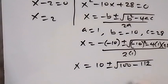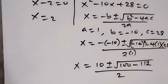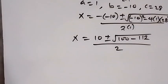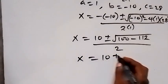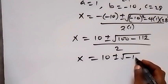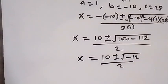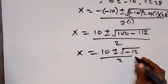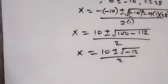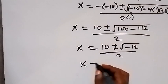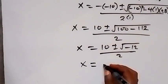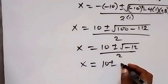Simplifying further, we have x equals 10 plus or minus square root of negative 12, over 2. The square root of negative 12 can be written as square root of 4 times 3 times negative 1. The square root of 4 is 2, so this becomes 2i root 3.